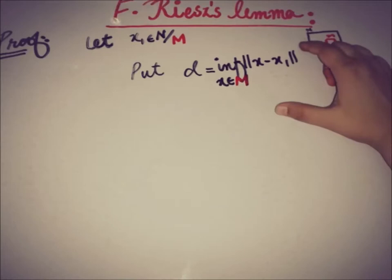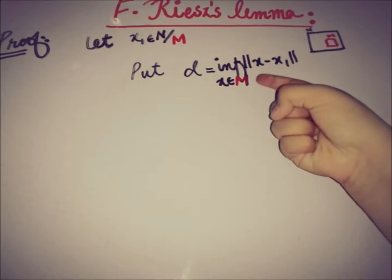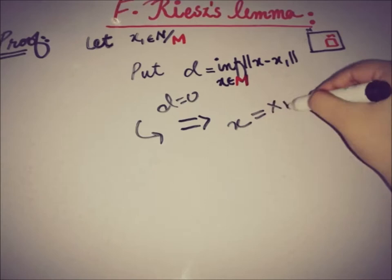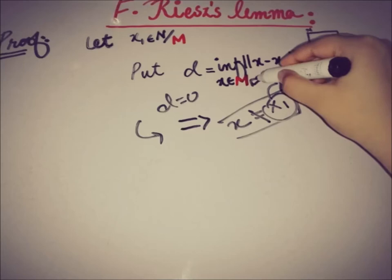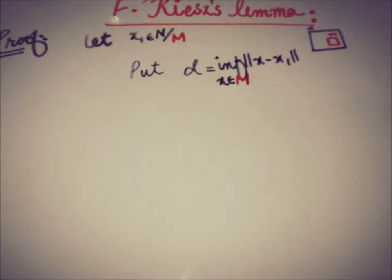This d must be greater than 0. It cannot be 0, because if d = 0, then the infimum equals 0, which would imply x₁ belongs to M — but x₁ was taken outside of M. Therefore d > 0.